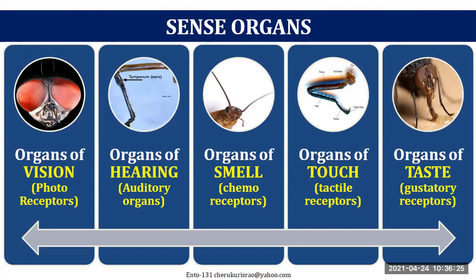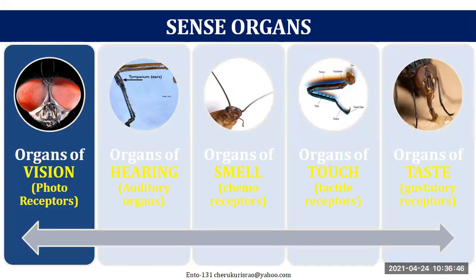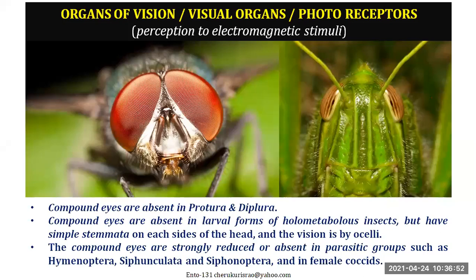We have two eyes, but insects will never have just one or two eyes — they have many, many eyes. The compound eyes have smaller eyes called units, also called ommatidium. Let us understand what are all the organs of vision. The first and most important organ of vision is the compound eye. You can look at insects at home and try to understand how these compound eyes look.